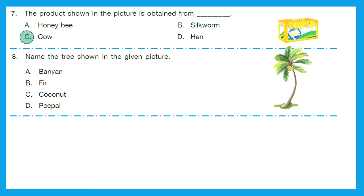Question 8: Name the tree shown in the given picture. Which tree is it? Can you see some coconuts on this tree? Yes, it's a coconut tree. Option C is the right answer.